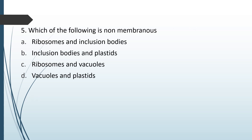Which of the following is non-membranous? Options: ribosomes and inclusion bodies; inclusion bodies and plastids; ribosomes and vacuoles; vacuoles and plastids. Which of these organelles do not have a membrane around them? The correct answer is option A — ribosomes and inclusion bodies, as they do not have any membrane around them. Plastids and vacuoles, on the other hand, do have a membrane.